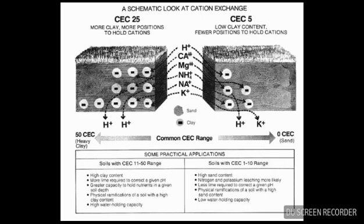A cation exchange capacity of 50 represents clay; zero cation exchange capacity represents sand. This is a common CEC range. For practical applications, soils with a cation exchange capacity in the 11 to 50 range have high clay content, require more lime to correct a given pH, and have a greater capacity to hold nutrients at a given soil depth.